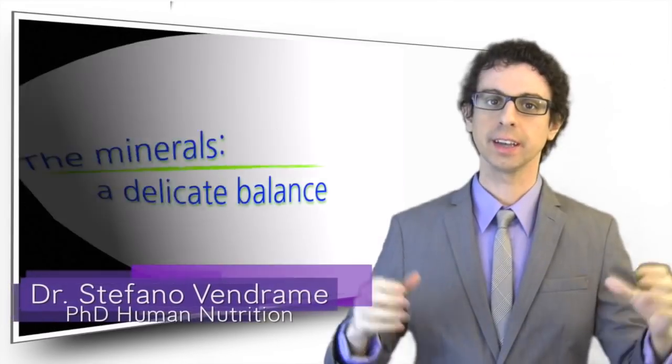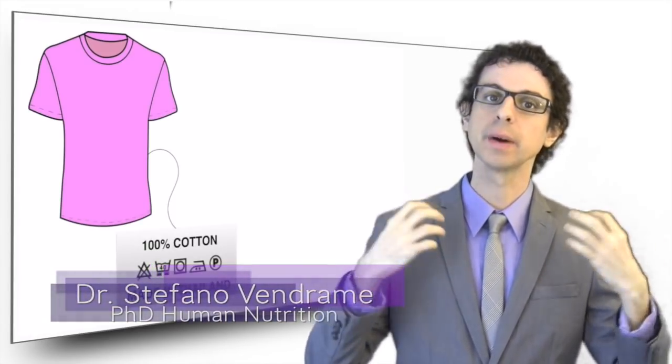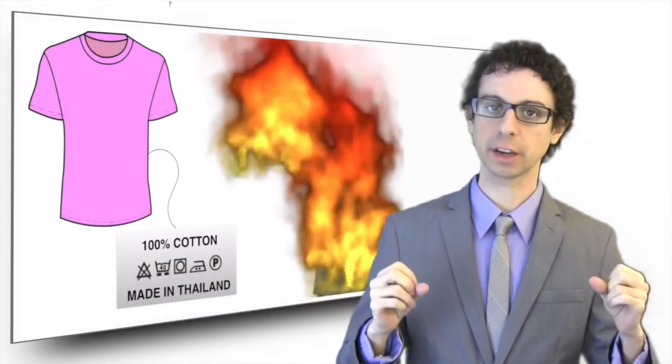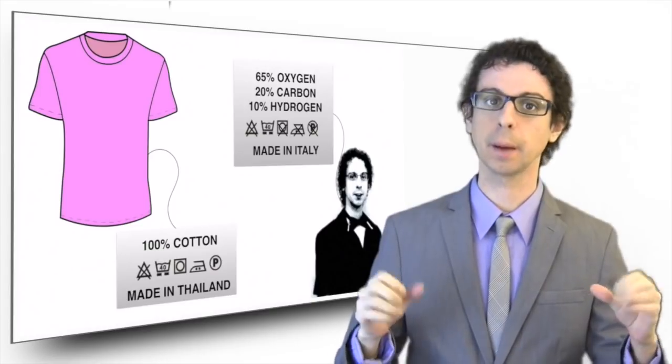The tag of my shirt says it's made of 100% cotton. If I were to have my own tag, it would go something like this: oxygen 65%, carbon 20%, hydrogen 10%, made in Italy.